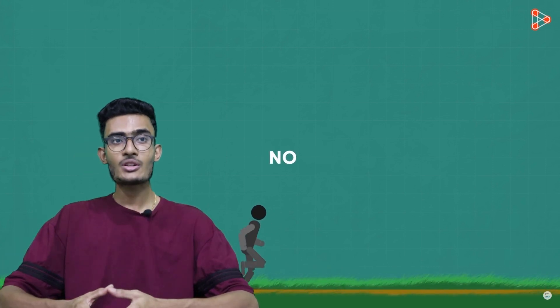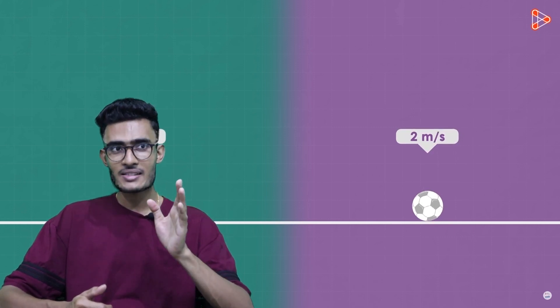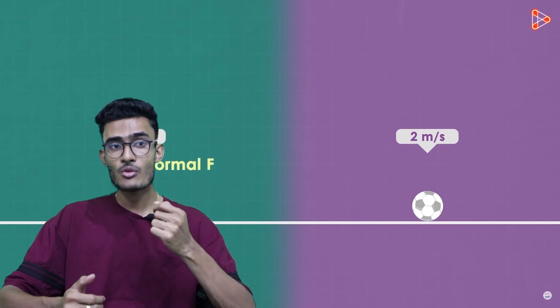The first law of motion is often called the law of inertia. It states that an object at rest will remain at rest and an object in motion will continue to move in a straight line at a constant speed unless acted upon by an external force.